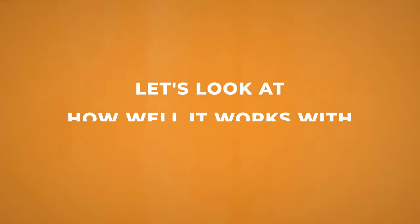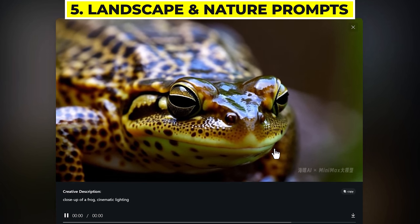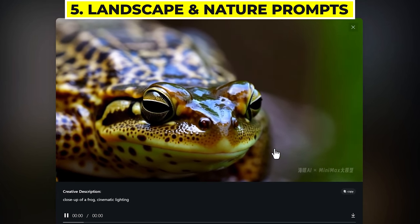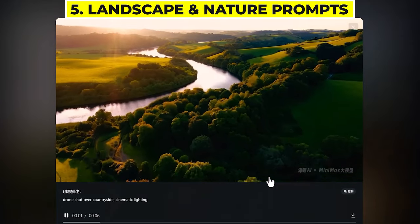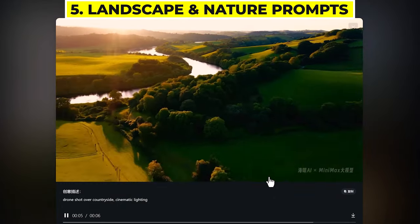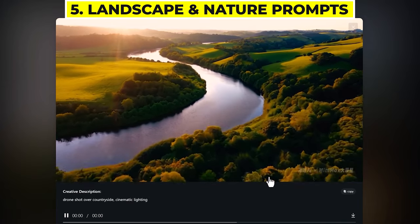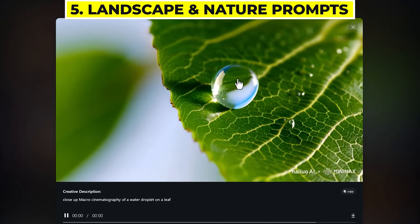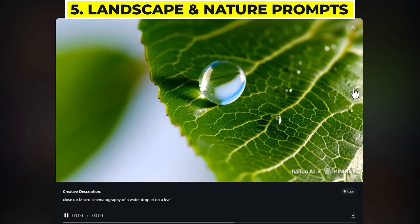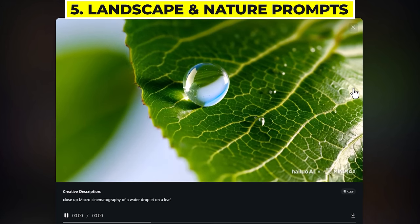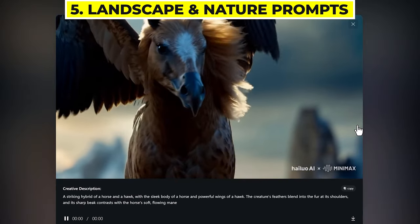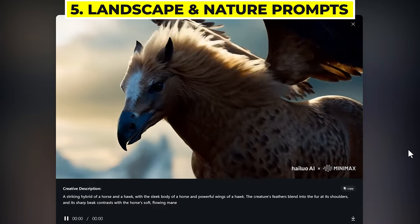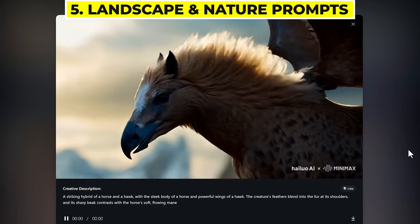Now let's have a look at landscape and nature prompts. I find it works really well with documentary style nature shots, like this video of a frog — it looks incredibly realistic with that really nice wet look to it. It's great at doing drone landscape shots, like this beautiful drone shot over some countryside. If you add words like cinematic lighting, it creates a really dramatic look. You can do some really beautiful macro shots as well, like a water droplet on a leaf — just add macro cinematography into your prompt. You can also have fun with animal prompts, like this hybrid of a horse and a hawk, which looks incredible — it's got that really nice flowing motion to the mane with that slow-mo cinematic look.